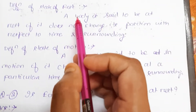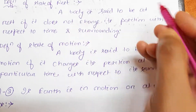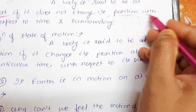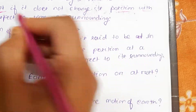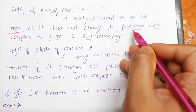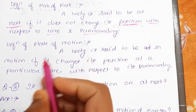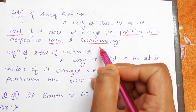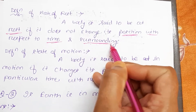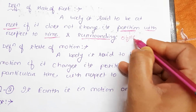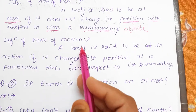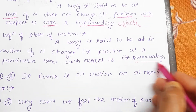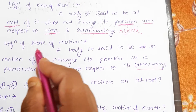The definition of state of rest is: a body is said to be at rest if it does not change its position with respect to time and surrounding. Remember, the position of the body is not changed with respect to its time and surrounding. The environment which surrounds us is known as the surrounding.